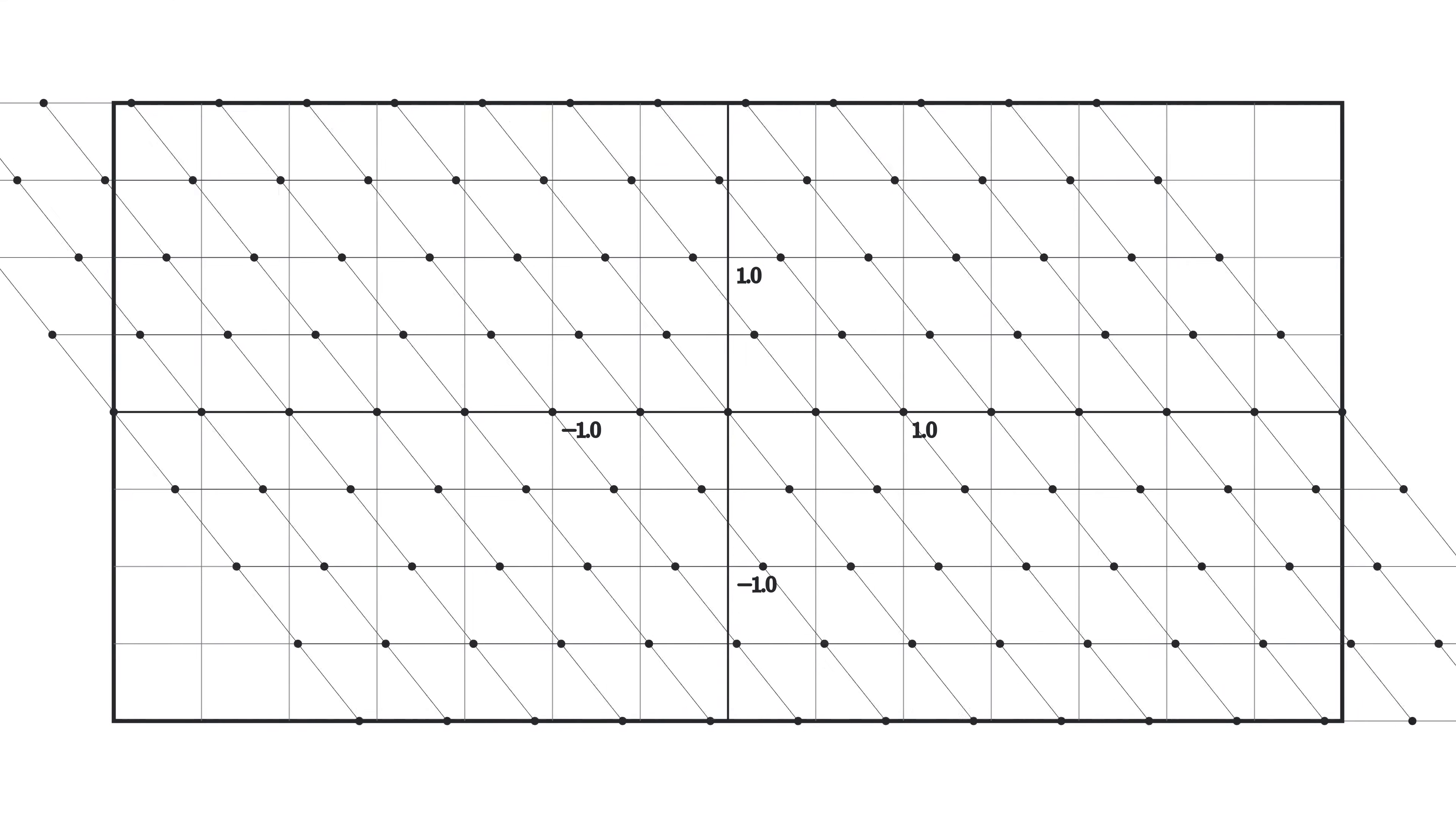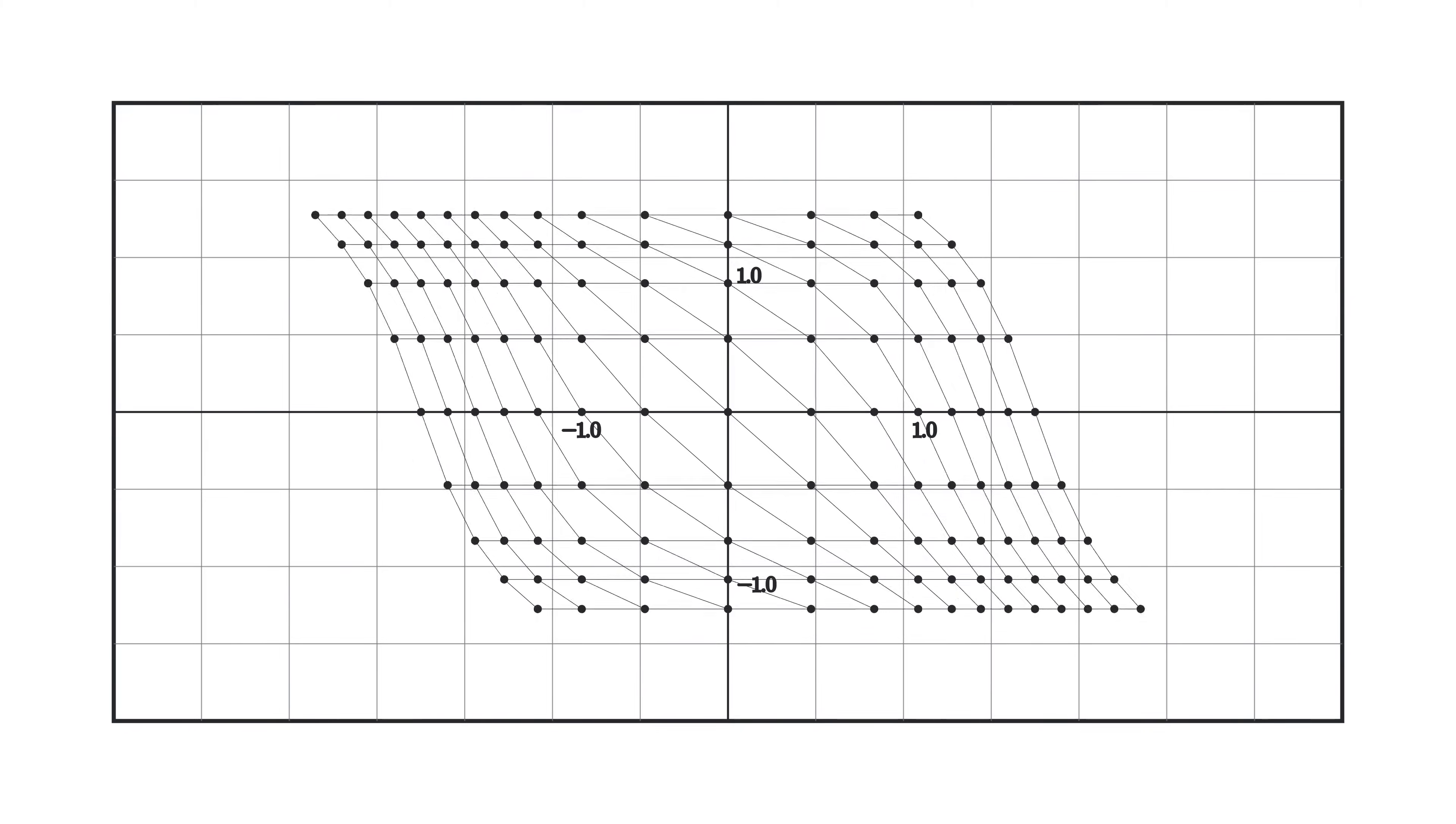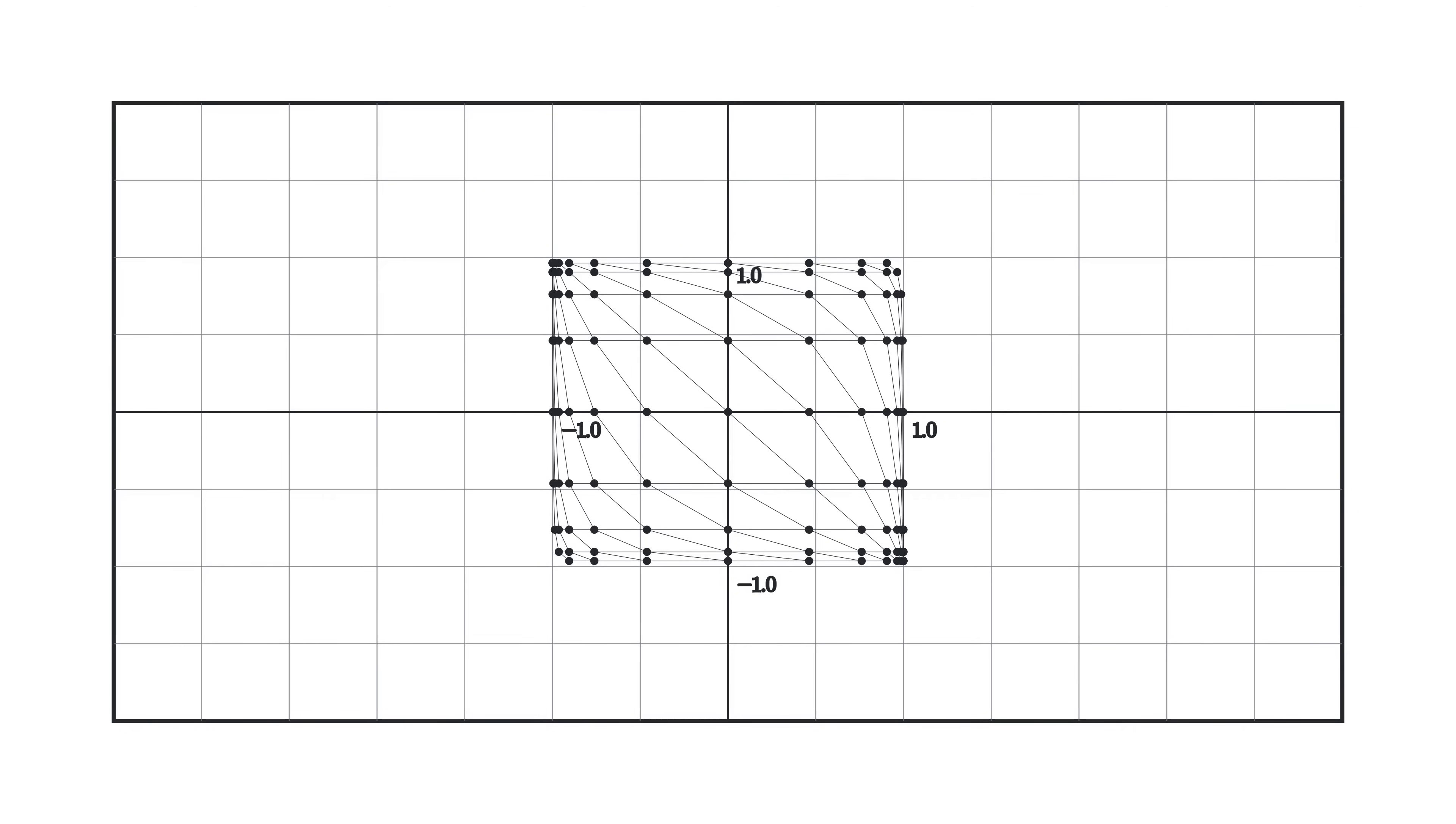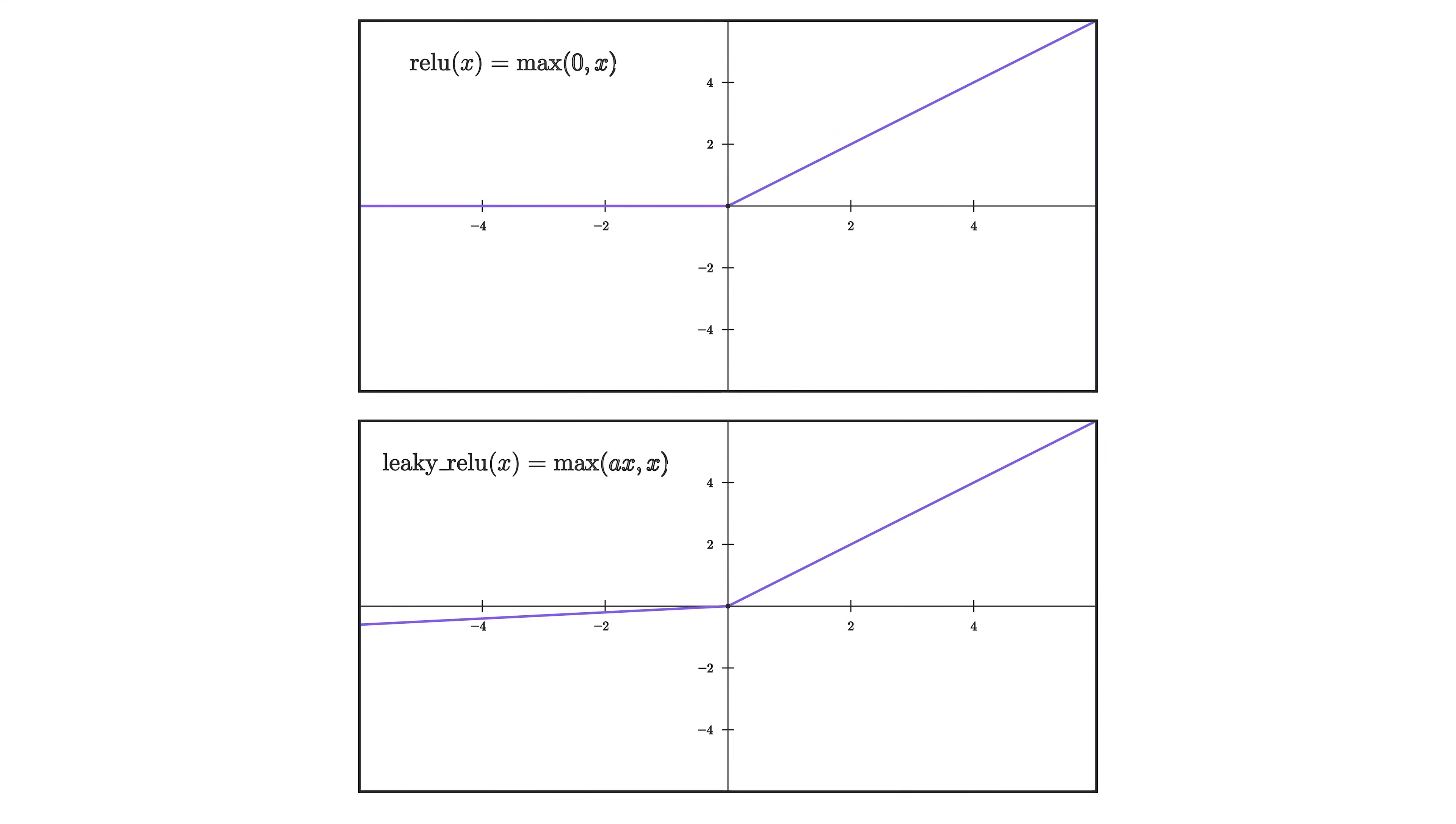Let's look at what happens to our space when we apply matrix multiplication followed by tanh. Here, tanh is being applied to both the x and y coordinates element-wise to our coordinate vectors, which is why both coordinates are squished to a range of negative one to one.